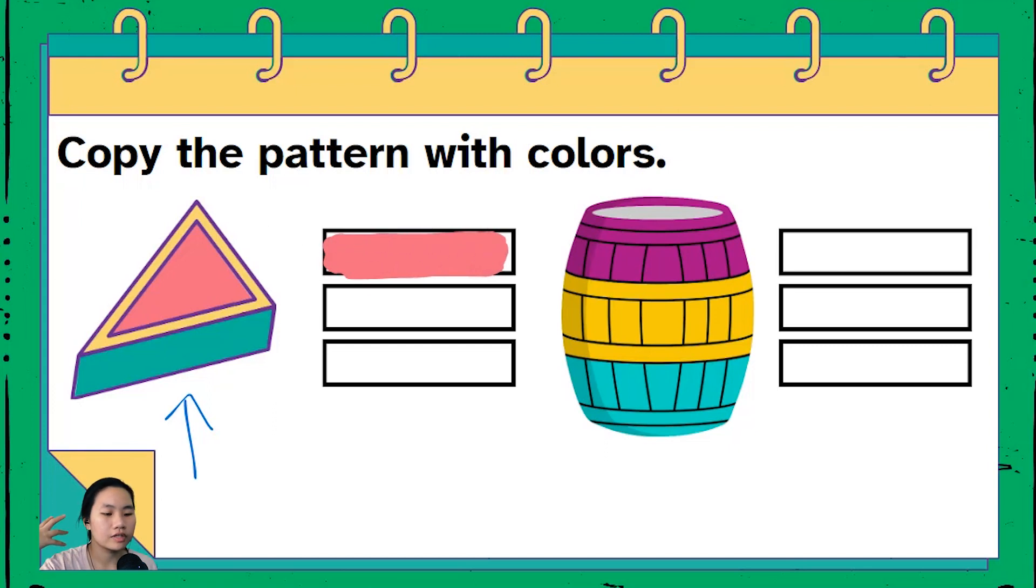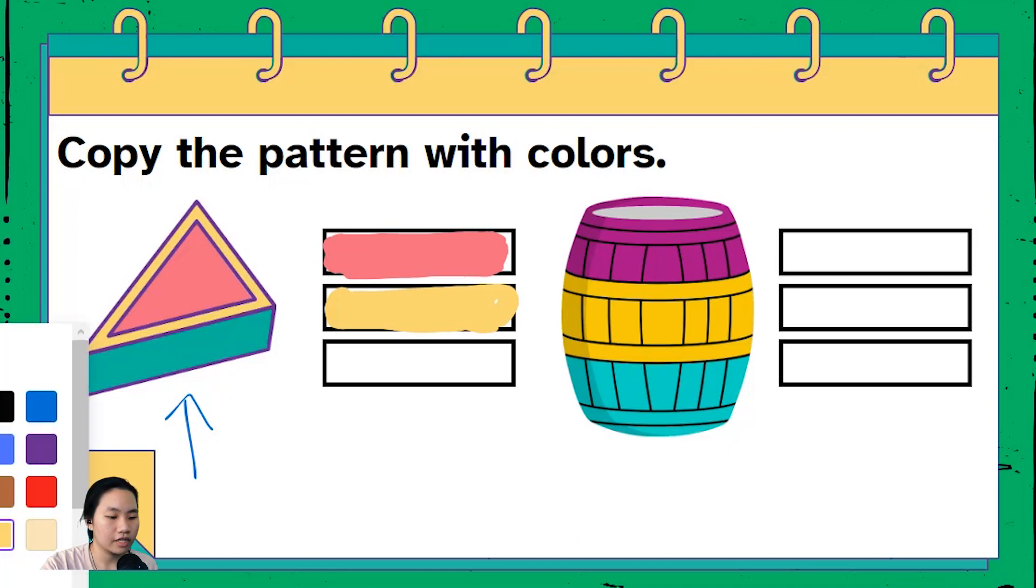Pinkish red. Next up what do you see? I'm seeing yellow. I'm seeing very soft yellow. What's the last color that you see in this object, in this triangle? It is green. So I have green over here.